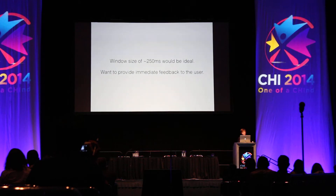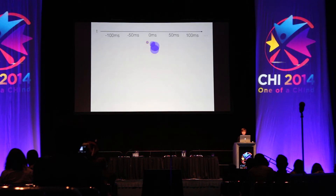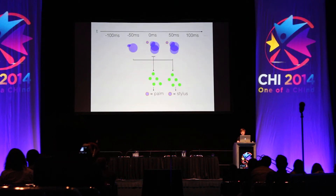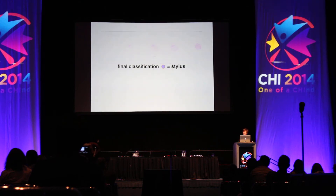We have two competing desires: waiting about a quarter second before classifying, while also providing immediate feedback to the user as they draw. So when a touch down occurs, we perform an initial guess and show feedback accordingly. Then as the touch evolves, we reclassify every 50 milliseconds using decision trees trained on successively larger touch windows. Each classifier casts a vote, and after about a quarter second, we stop and take the majority vote, allowing us to correct an initially wrong guess.